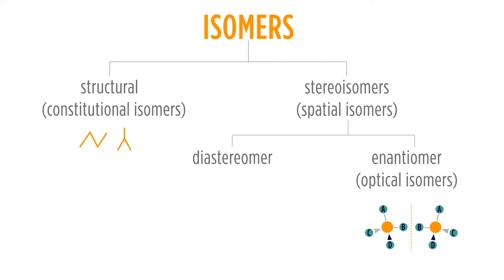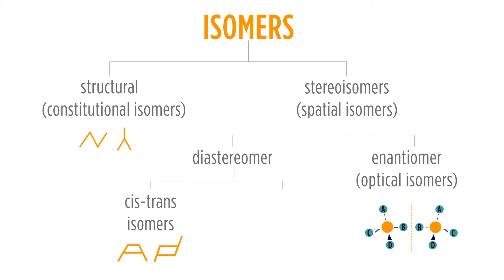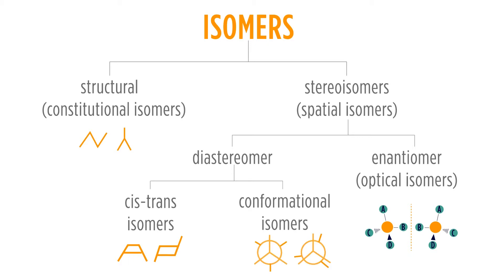Diastereomers are also stereoisomers. You can have a diastereomer that is based on a cis-trans isomerization, where we have a component like a double bond where we cannot rotate the two groups. Cis is on the same side, trans is on the opposite side. Conformers are actually rotations — we can have different conformations or different rotations. The thing about conformations is they are spatial arrangements, but they can be converted back and forth by just rotating around a bond.